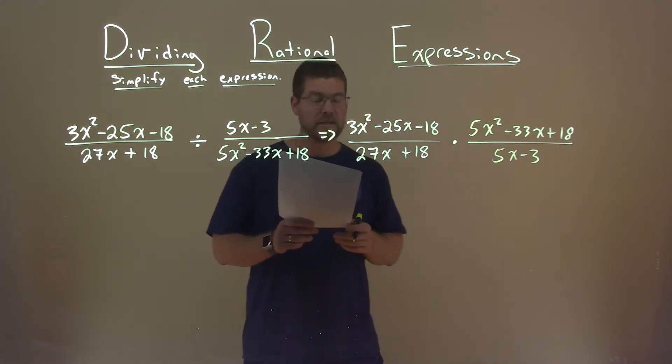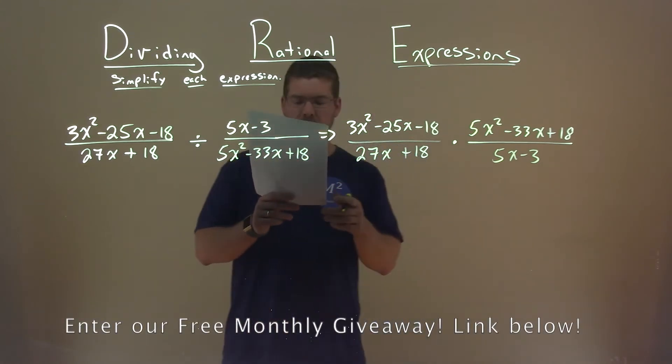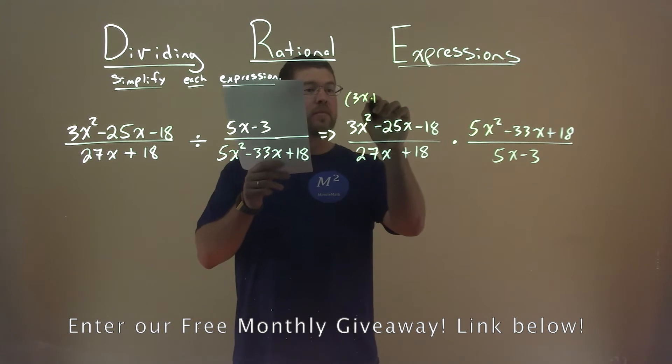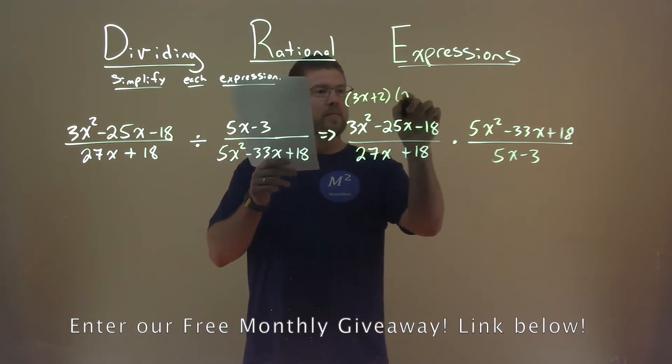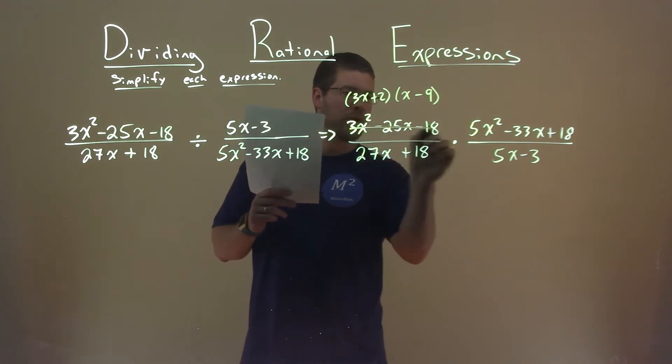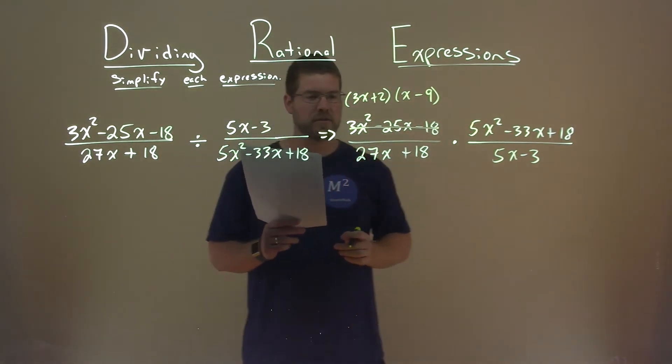So now, let's factor. This first part here factors out to be 3x plus 2 times x minus 9. So we're going to rewrite that in factored form and cross out the original part.